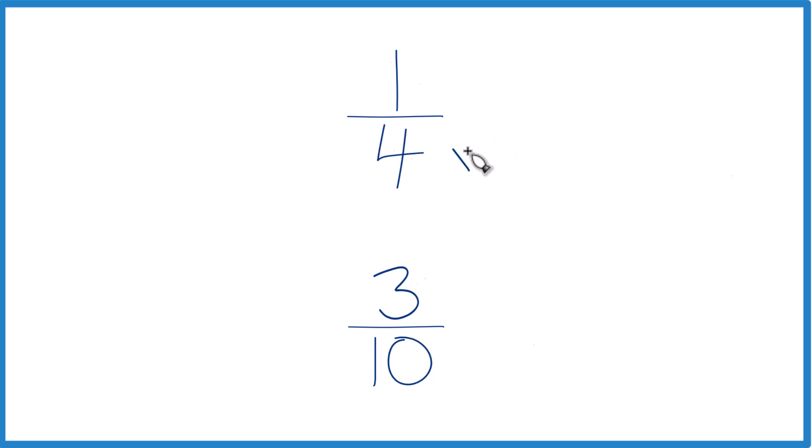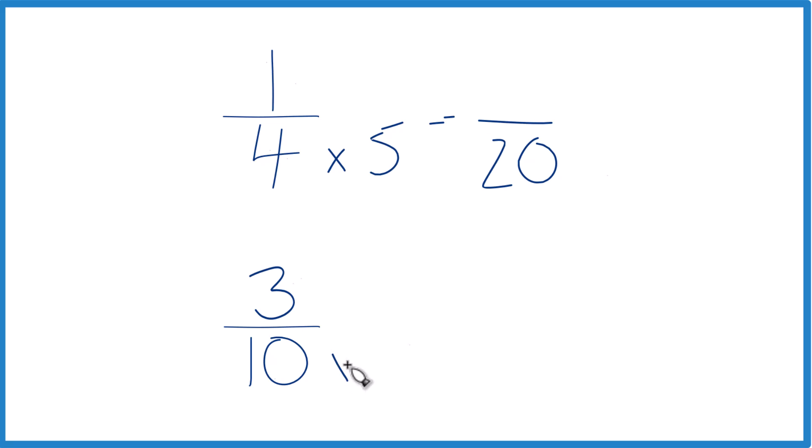So I'm going to multiply four times five, and that would give me twenty. And then down here, I'll multiply ten times two, because that gives me twenty as well.